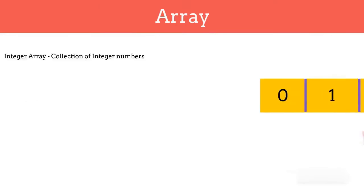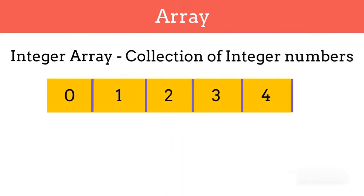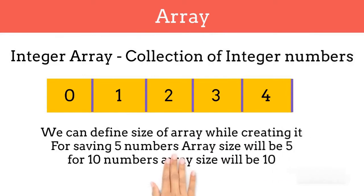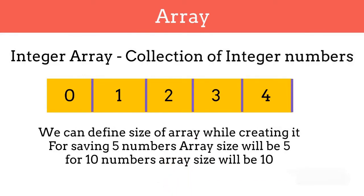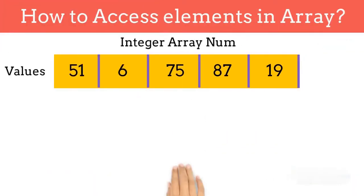Here, array comes into the picture. An array is a collection of same type of elements. Now let's see how we can solve our problem with the help of an array. If we want to save 5 numbers, we will create an array of size 5 and save these integers in it. Let's call the name of our array 'num'.